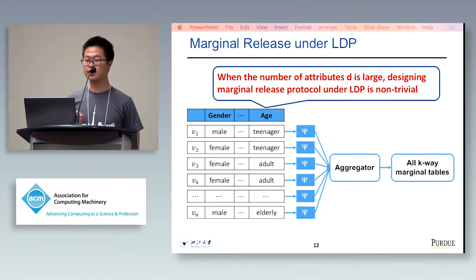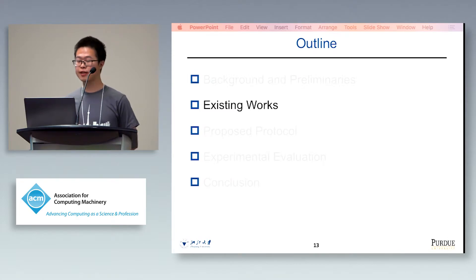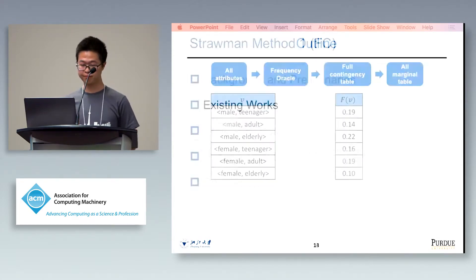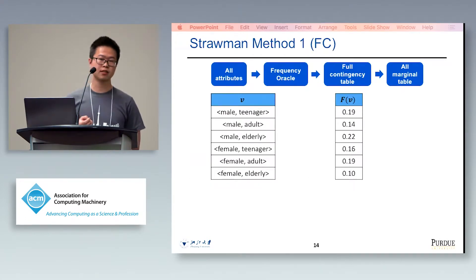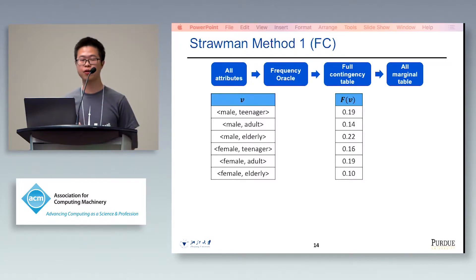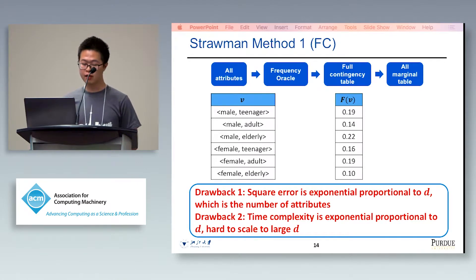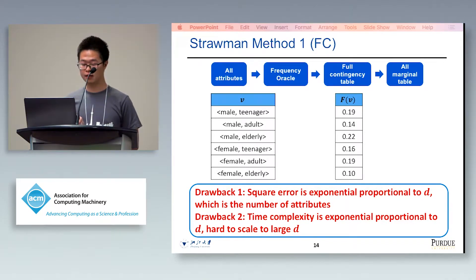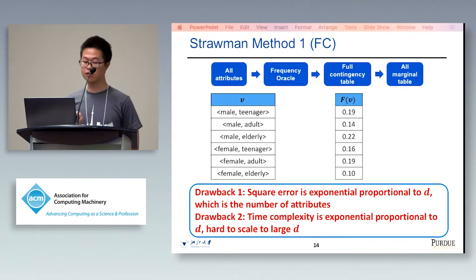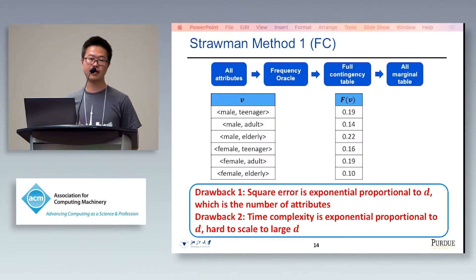When the number of attributes D is large, designing a marginal release protocol under LDP is non-trivial. The most straightforward method is to first construct a full contingency table that satisfies LDP, and then post-process this full contingency table to get all the marginal tables. However, the squared error of this method is exponentially proportional to D, and the time complexity is also exponentially proportional to D, making this method hard to scale to larger D settings.